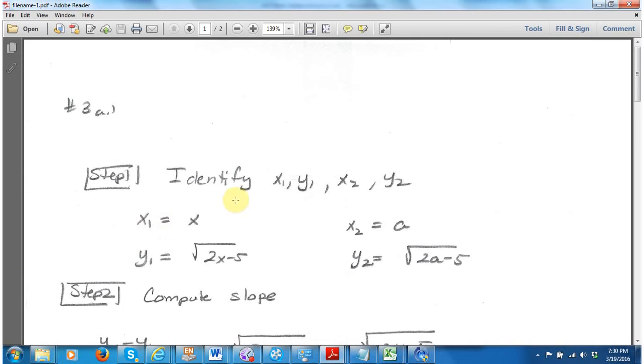The first step is to identify x1, y1, x2, y2. Same steps as before when we had simpler functions. Here the x1 is x, it's not an actual number. The y1 is found by plugging x into the equation, and the equation is 2x minus 5 under the radical.